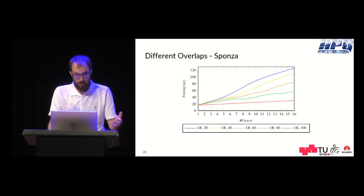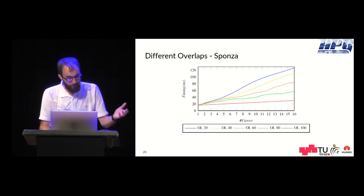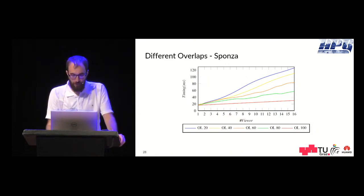Different overlaps result in different timings of course, so this is as you would expect. For an overlap of 100% you have this minimal overhead which increases the timings a bit here. And this is also for the Sponza scene.